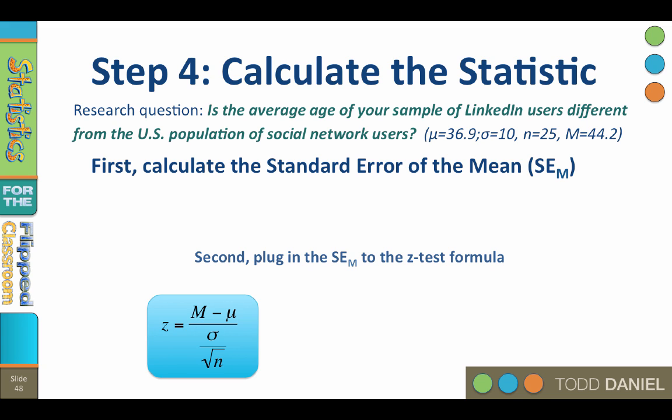First, we will calculate the standard error of the mean, abbreviated sigma sub m or SE sub m. We plug in 10 and 25. The square root of 25 is 5. 10 divided by 5 is 2.